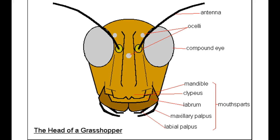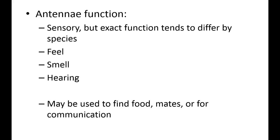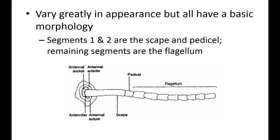For the antenna, the three major parts are: the scape, which connects to the head; the pedicel, the base segment; and the flagellum, which is what varies between different insects. Antennae can be used for feeling, smelling, and hearing — functions include finding food, finding mates, and communicating. You are not required to memorize antenna types; bring the picture handout to the test and you can reference it.